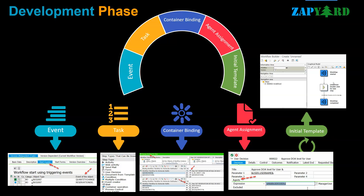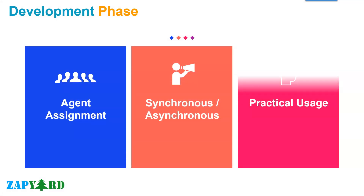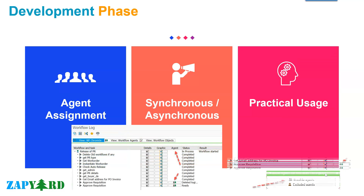Right agent determination and assignment is the heart of any SAP workflow. We will talk about this process in detail. The trainer will continue in depth with agent determinations. He will talk about possible agents, responsible agents, and excluded agents. He will explain the difference between dialogue and non-dialogue methods, and also clarify the concepts of synchronous and asynchronous methods and tasks.